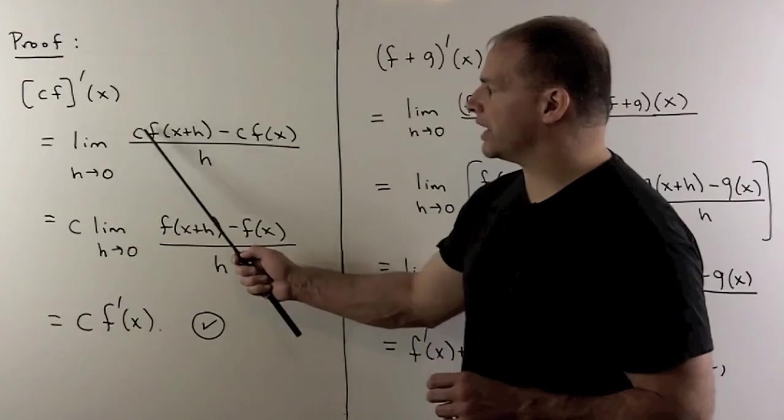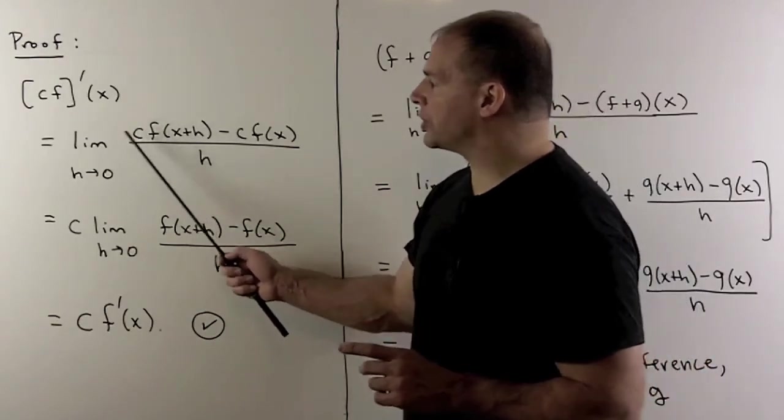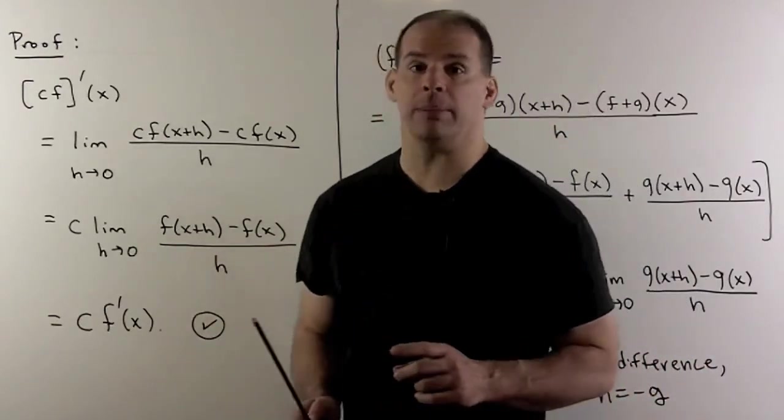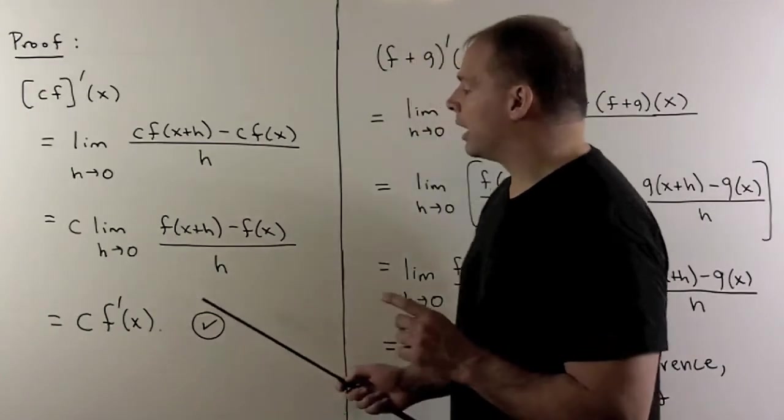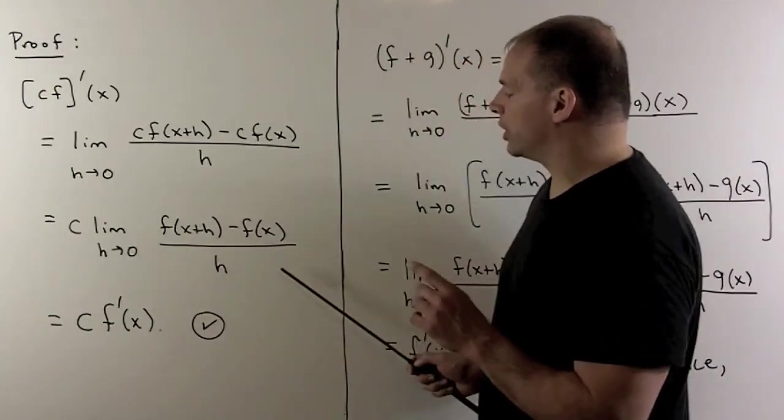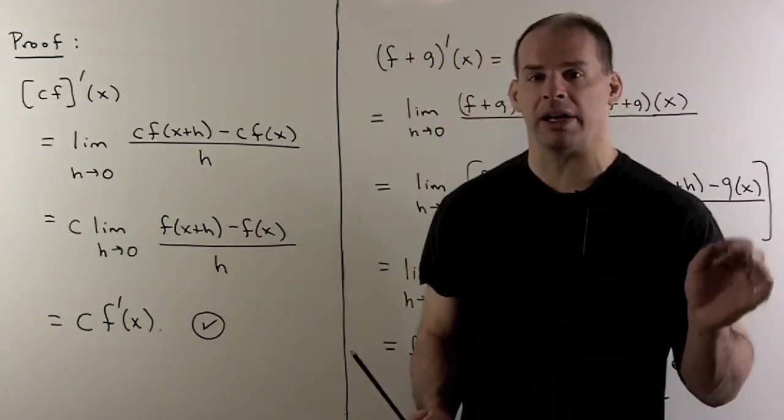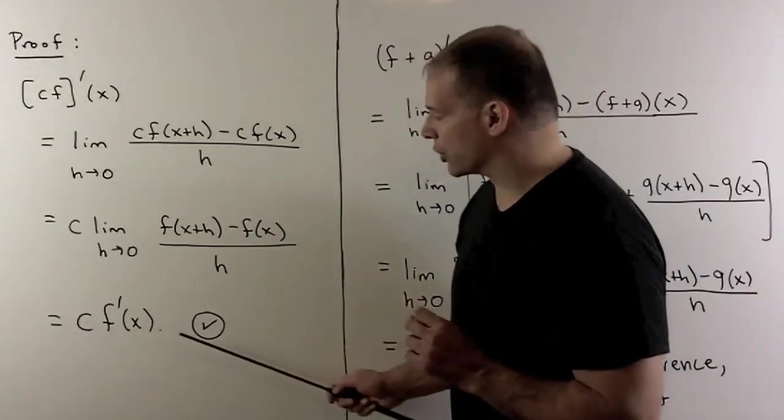In the numerator, I can pull the c out. And we know that's just a number, so it can go out in front of the limit. Now, what's left over is just a definition of the derivative of f, evaluated at x. So that gives us our first result.